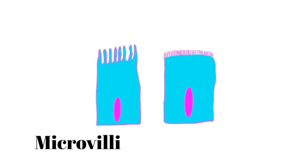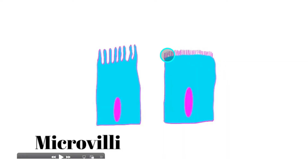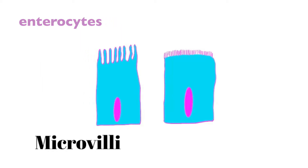Microvilli allow a cell to absorb more things, or potentially even secrete more things. Through a microscope, microvilli look like projections coming off the apical surface of the cell. This is significantly important for the intestines, specifically the small intestine, because many of the cells of the small intestine — known as enterocytes — have these surface modifications known as microvilli.